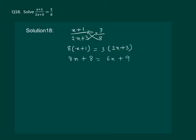Let us bring the like terms together. We get 8x minus 6x equal to 9 minus 8. That means 2x equal to 1, and x equal to half, which is the required answer.